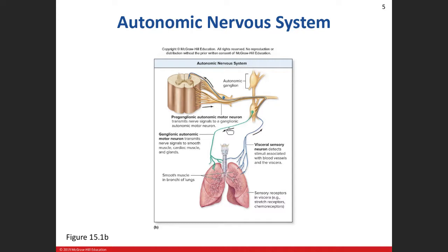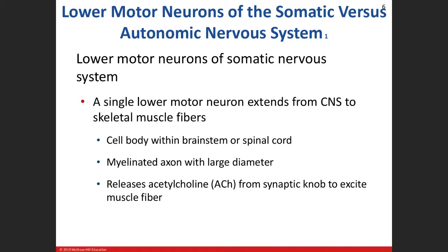The postganglionic neuron could go to the heart, a sweat gland, or the adrenal gland to release adrenaline. So with the autonomic nervous system, we have two motor neurons involved in the effector process, compared to just one in the somatic nervous system.